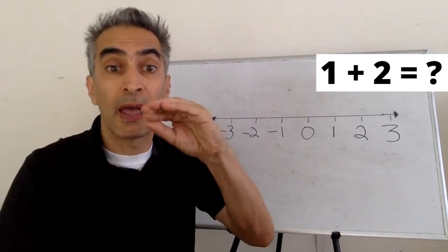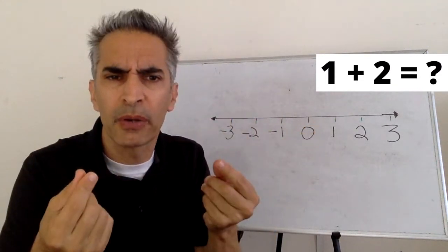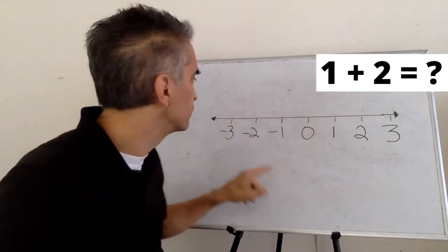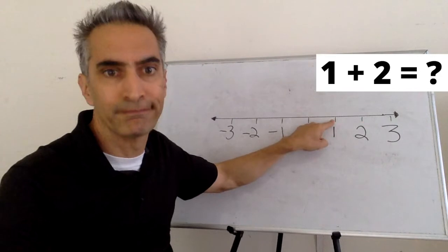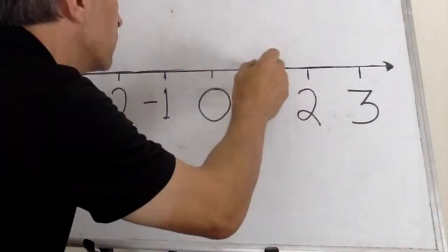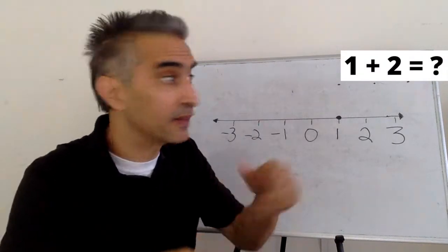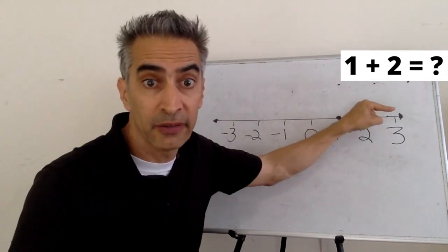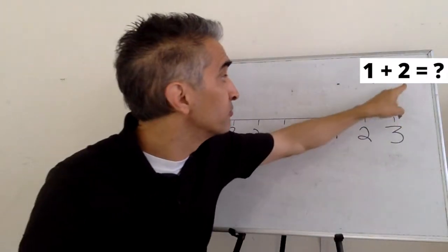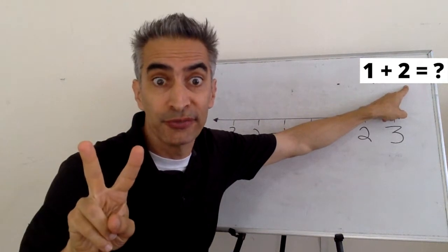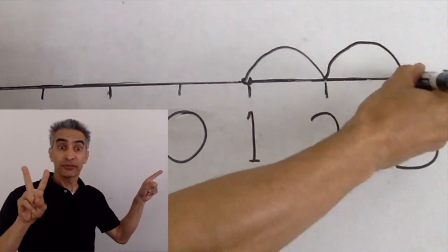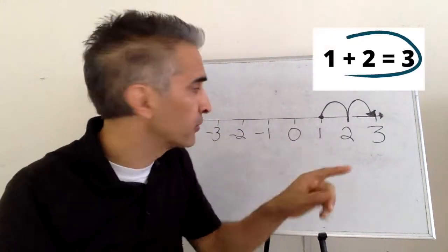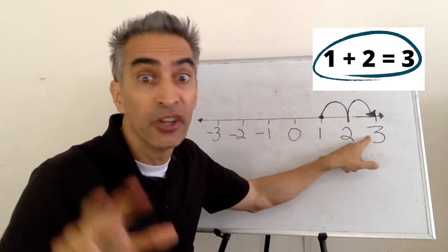Our example problem is 1 plus 2. We're going to start with 1 — there it is. Next, this addition sign means we're going to move to the right 2 places: 1, 2. 1 plus 2 equals 3.